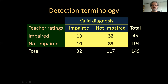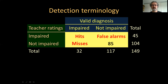The terminology used in the detection literature is that when a case is correctly classified — so a case of language impairment is detected correctly — that is called a hit. When a case of language impairment is not detected, it is missed, so these are the misses. When a non-case is misclassified as language impaired, that's called a false alarm or false positive. And when someone who's not impaired is correctly judged to be not impaired, that is called a correct rejection.